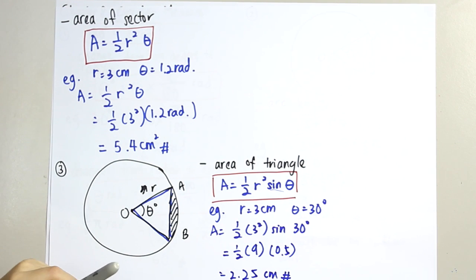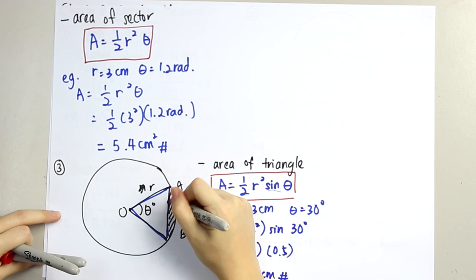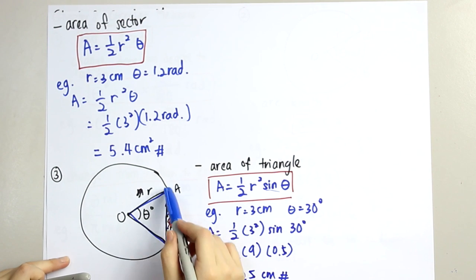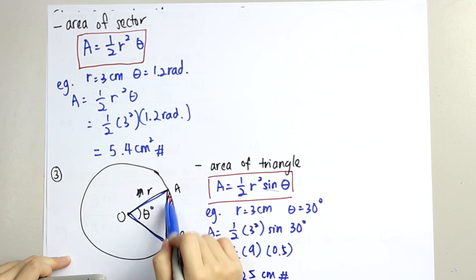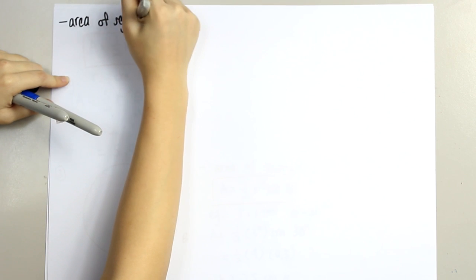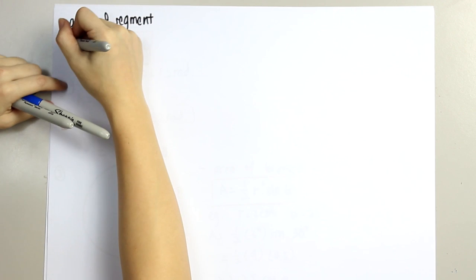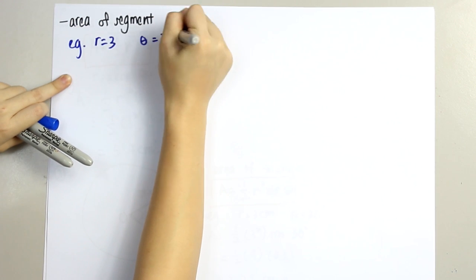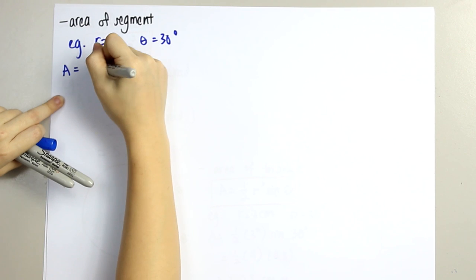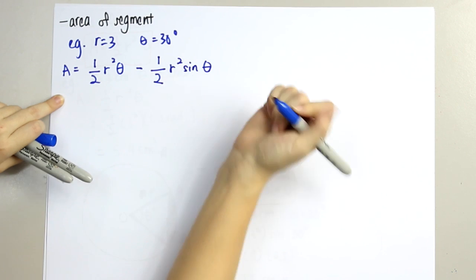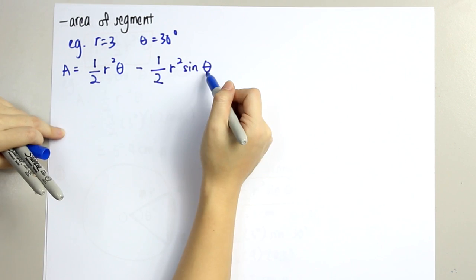The other type of question is finding the area of the segment. To find the area of the segment, we take the area of the sector minus the area of the triangle. So let's say r equals 3 and theta equals 30 degrees. Area of segment equals 1 over 2 r squared theta (in radian) minus 1 over 2 r squared sin theta (in degrees). Take note: the theta in the sector formula must be in radian unit, and the theta in the triangle formula must be in degree unit.